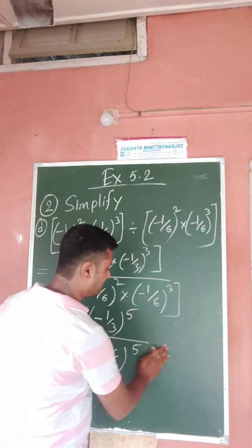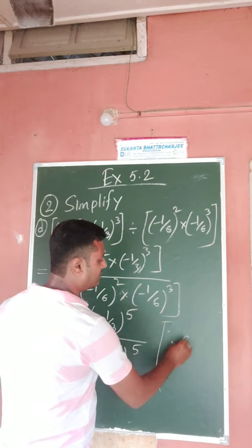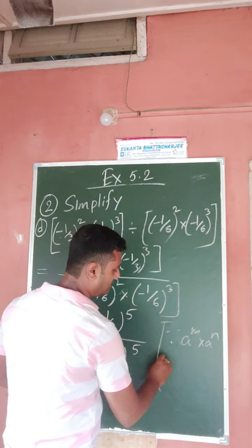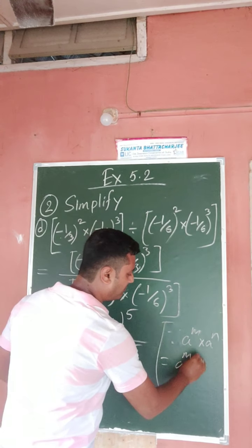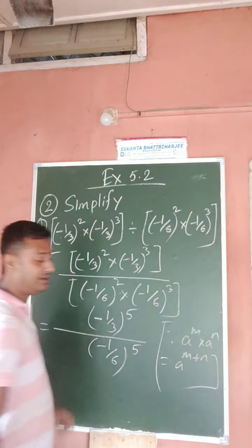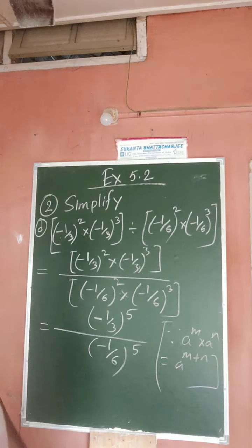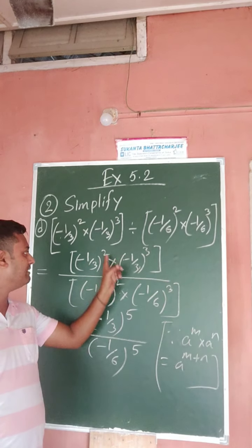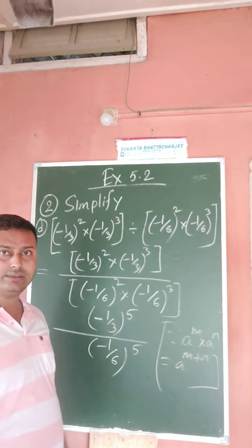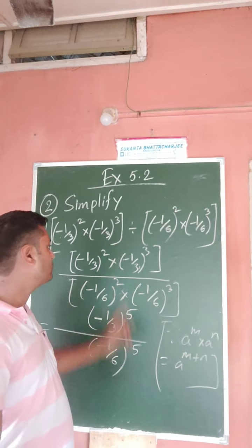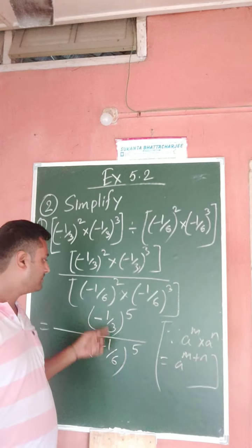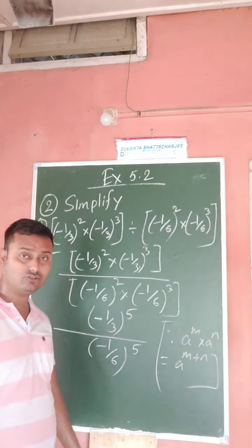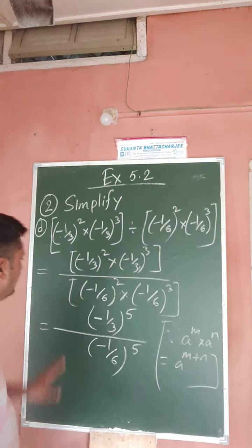Since a to the power m into a to the power n equals a to the power m plus n: for the numerator, a is minus 1 by 3, m is 2, n is 3. In the denominator, a is minus 1 by 6, m is 2, n is 3.